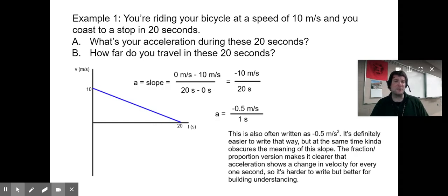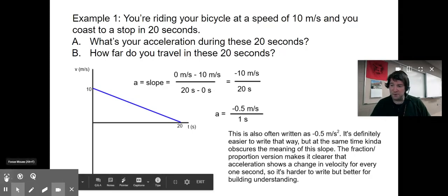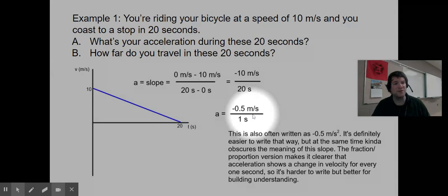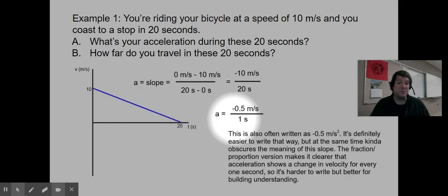I strongly prefer when I'm new to thinking about acceleration to write it as this fraction. Even though it's harder to write, it's a whole lot easier to make sense out of what does it mean. Because this fraction means this acceleration of negative 0.5 meters per second per second is saying that for every second that this bike is coasting, it loses, negative sign, it loses 0.5 meters per second of velocity. Or every second that this bike coasts, the velocity decreases by 0.5 meters per second.